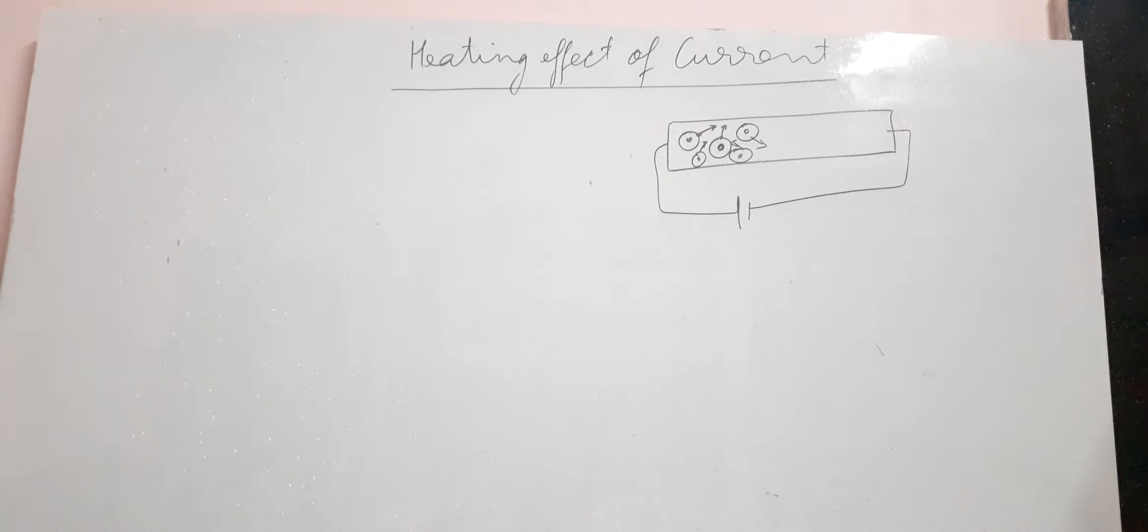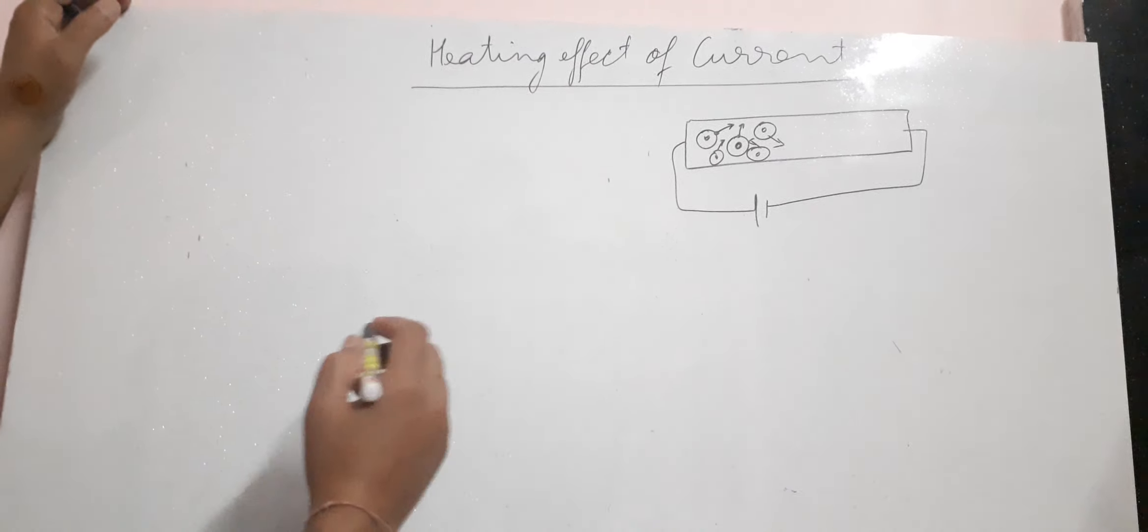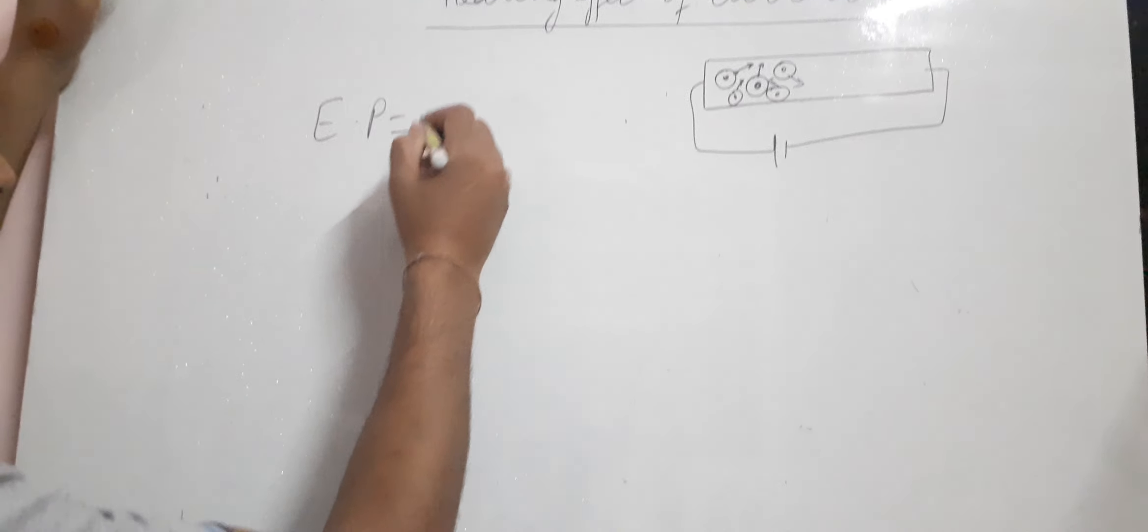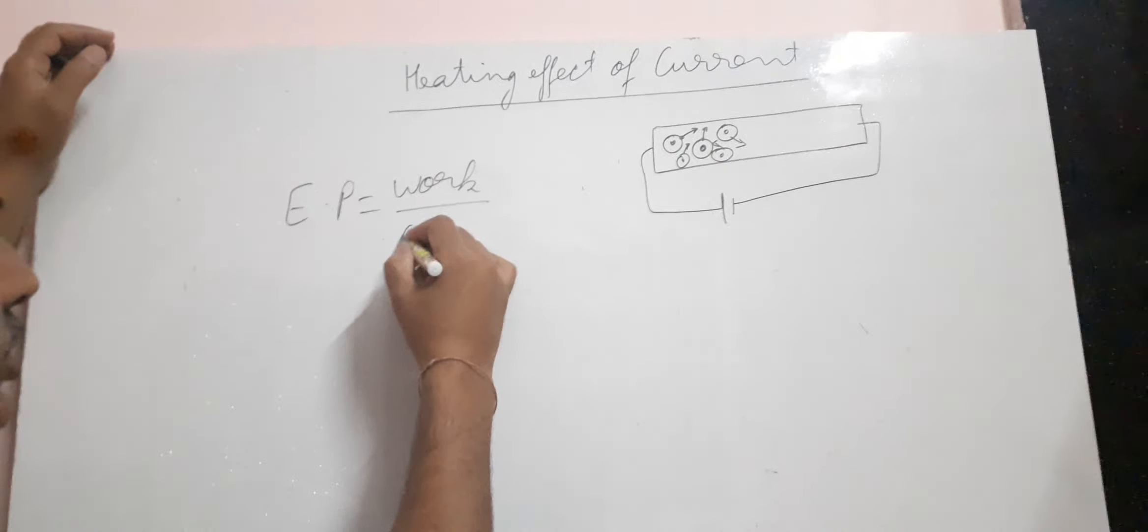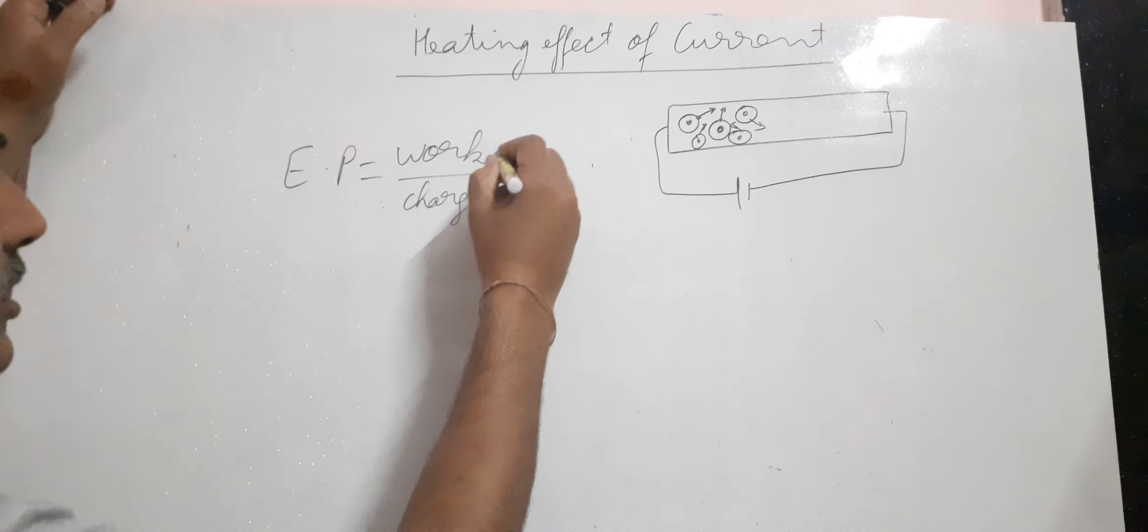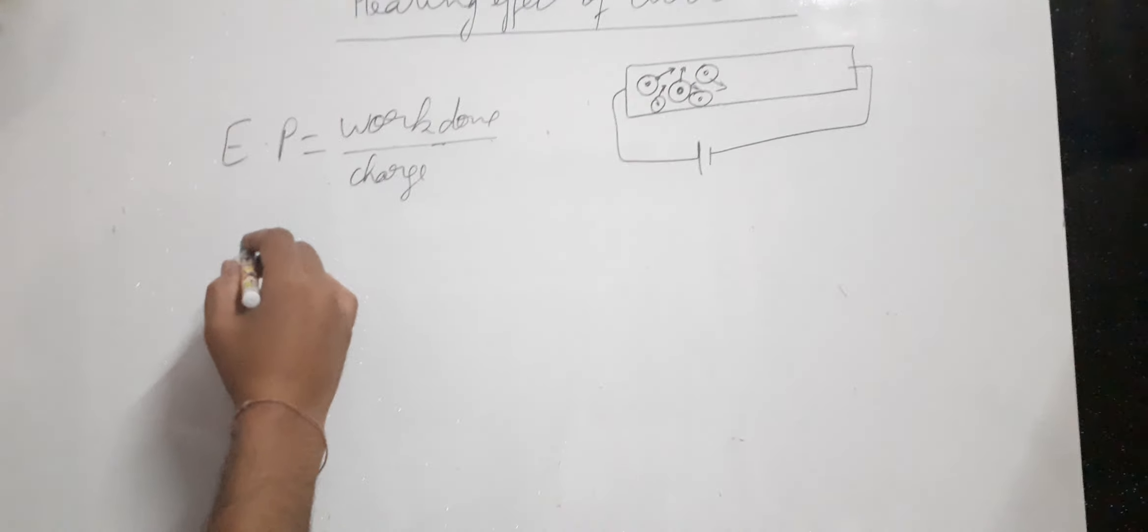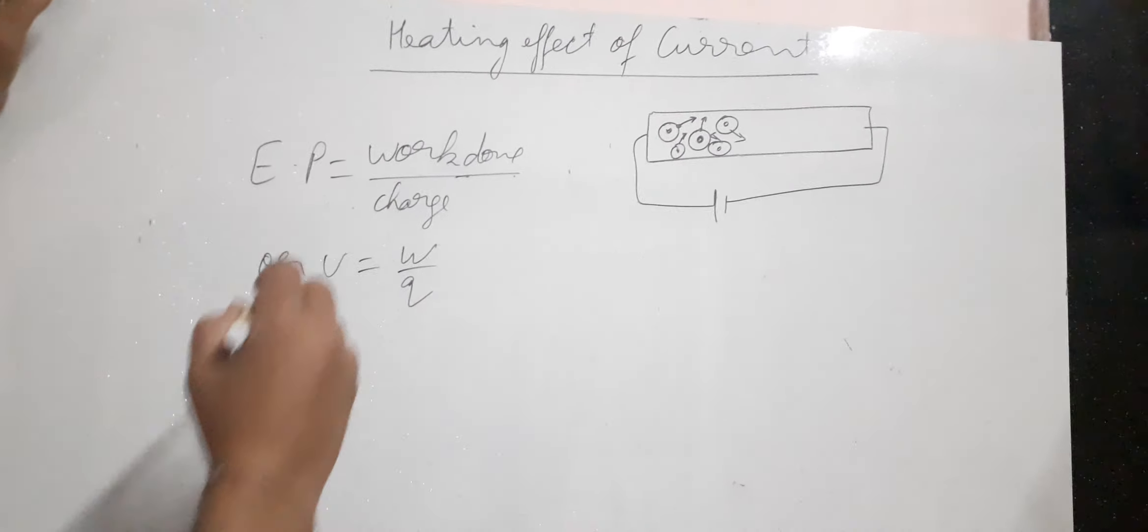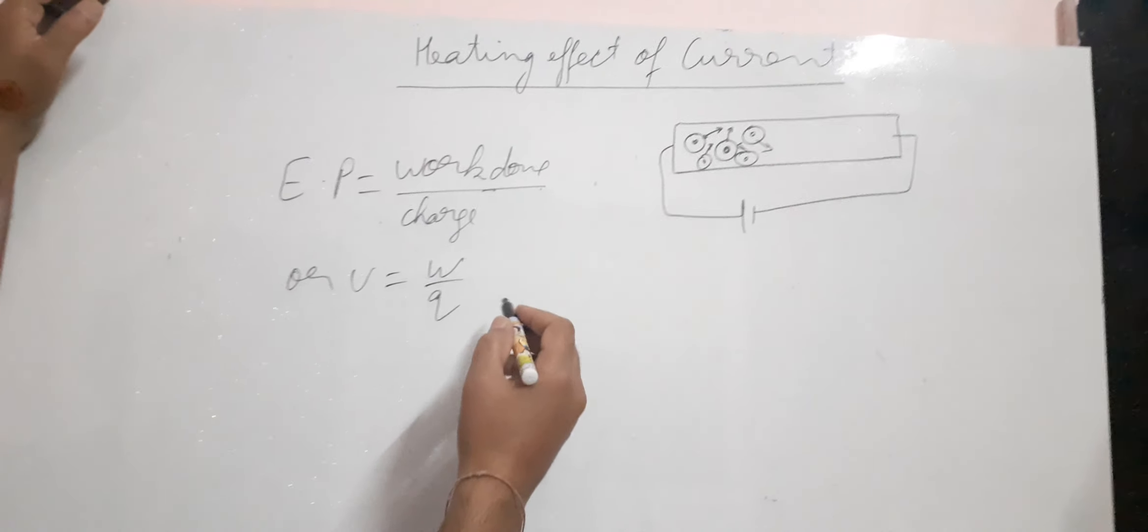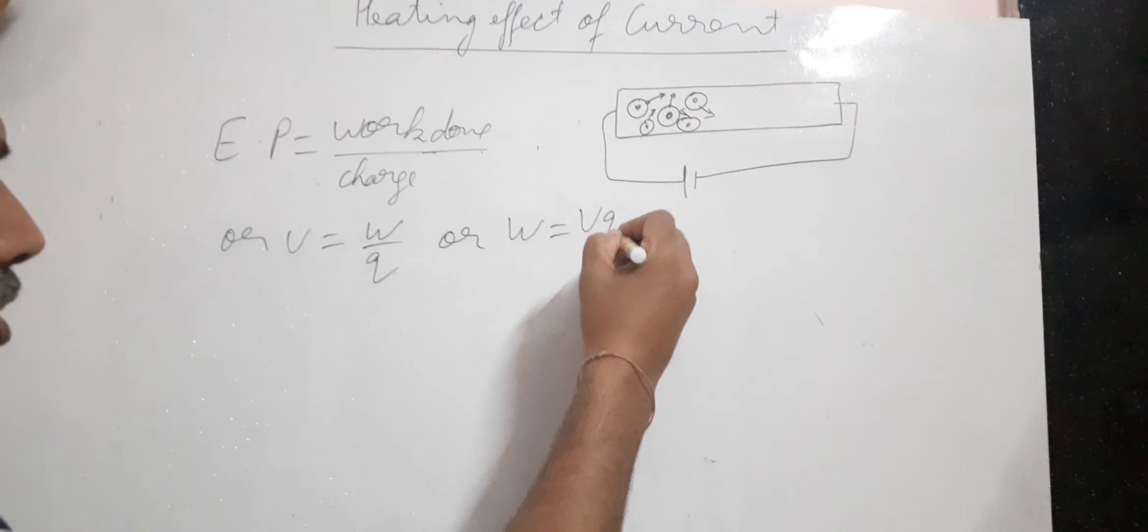Now let's talk about the derivation. You all have learned that electric potential is equal to work done upon the charge transferred. Or you can write it as V = W/Q.